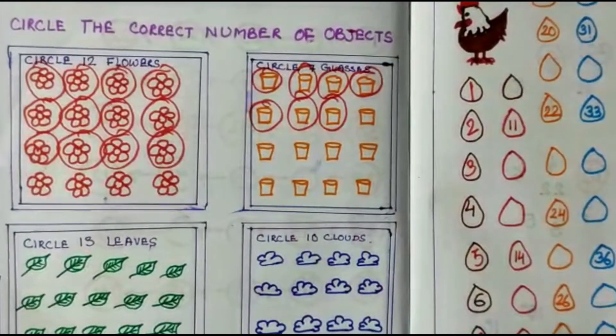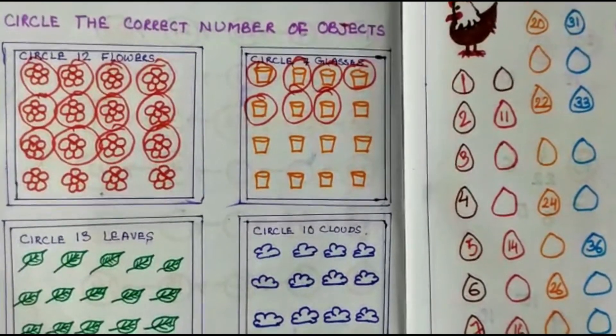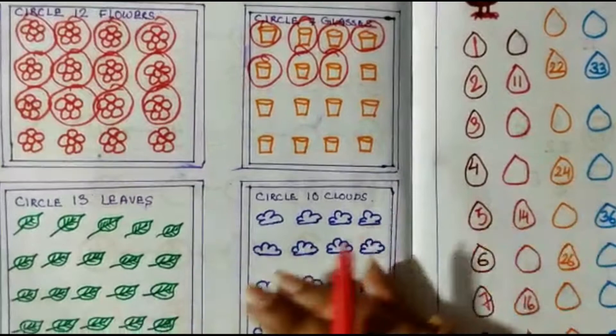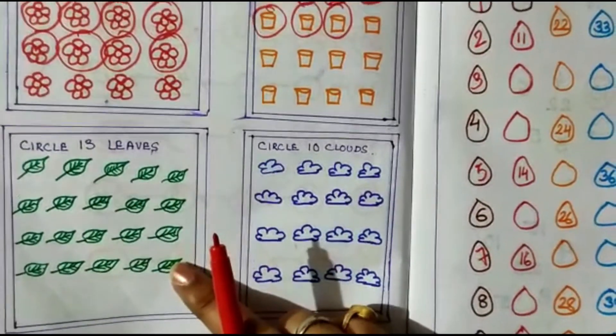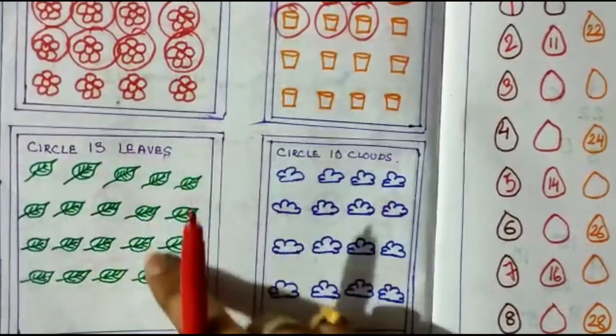We count 12 flowers and circle them. Same type here: circle 13 leaves. Here some leaves are marked, we count 13 leaves and circle them.